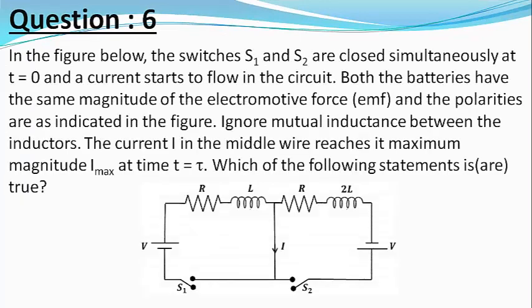the switches S1 and S2 are closed simultaneously at t equals 0 and a current starts to flow in the circuit. Both the batteries have the same magnitude of the electromotive force EMF and the polarities are as indicated in the figure. Ignore the mutual inductance between the inductors.